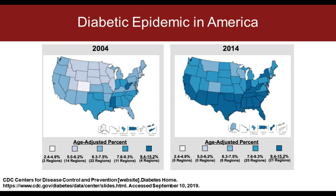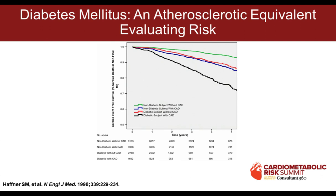The diabetic epidemic in America is enormous, and it's important to discuss the role of testing in this population. 20 years ago, Steve Hafner defined the atherosclerotic risk equivalent — a diabetic with no coronary disease has the same cardiac event risk as a non-diabetic with a prior coronary event. We started doing stress tests on everyone. However, the DIAD study showed that screening asymptomatic diabetics does not change outcome, so we need to understand how we evaluate diabetics more carefully.